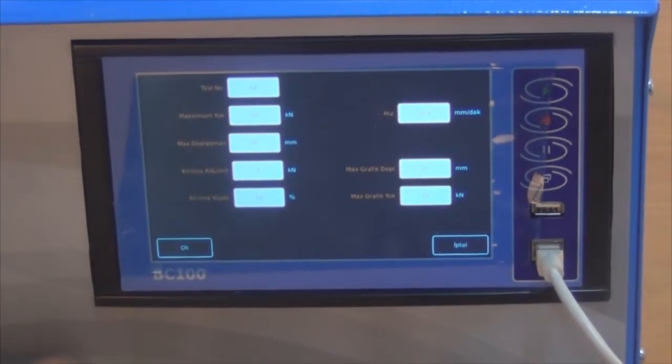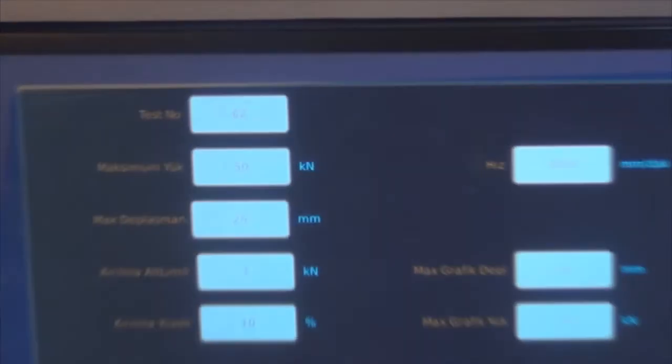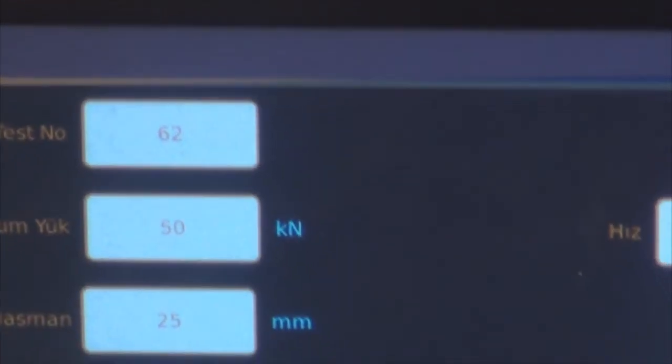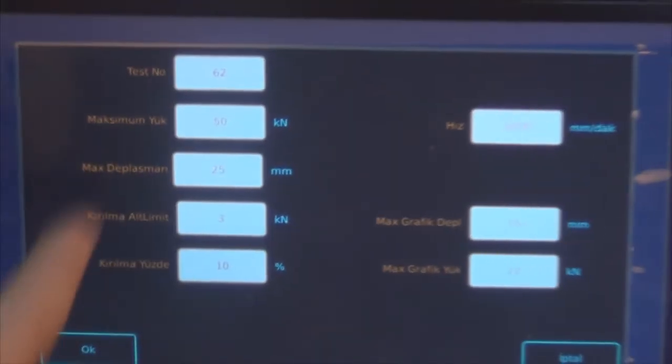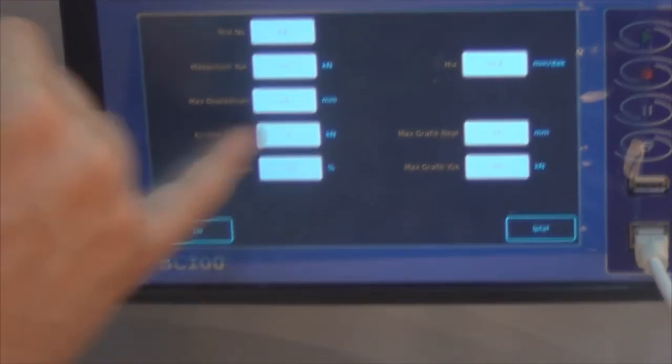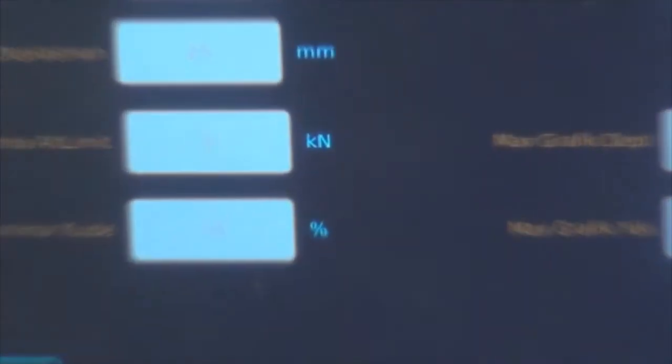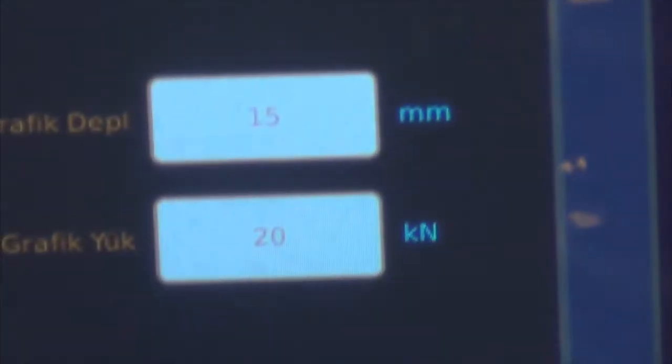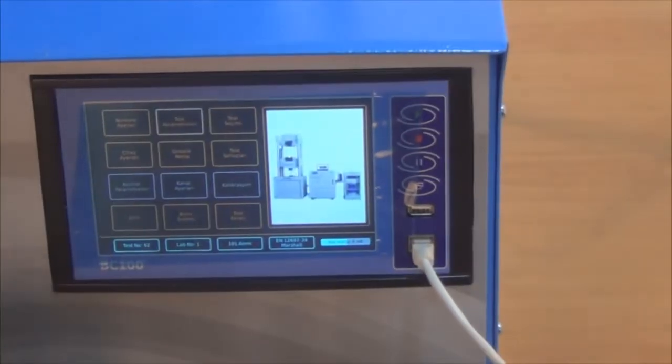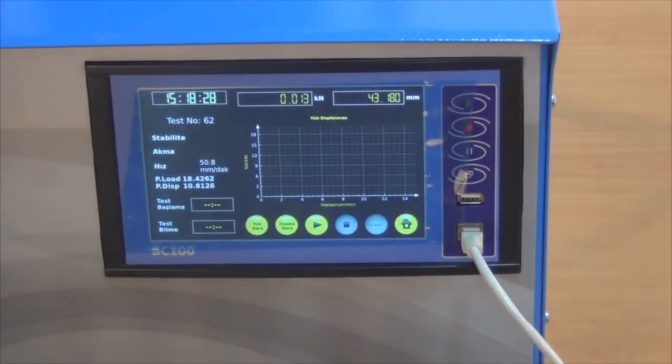In the second button we have test parameters. In the first line there is test number, maximum load, maximum displacement. These values can be changed according to the sensor or load cell that you are using. We have failure threshold which is set as 3 mm and the failure percentage. The important part is 15.8 mm per minute, which is the Marshall speed. These are related to the graph axis. After setting these parameters, we go to the test screen.